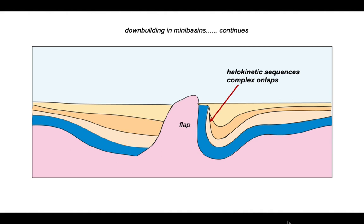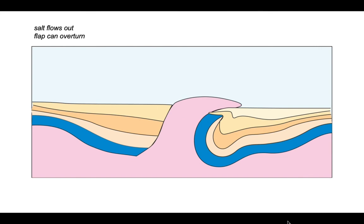Eventually, of course, the salt could flow out on the surface like this, and the flap itself can overturn along with some of the early deposited halokinetic sequences.